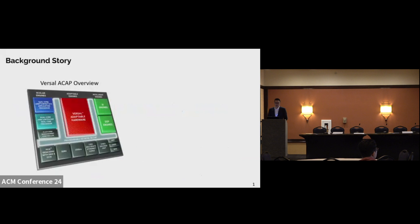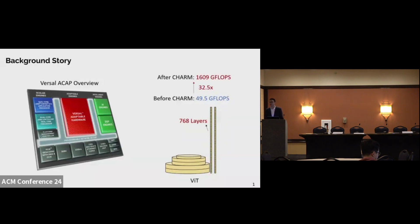Back to last year, we were very excited to work on Versal ACAP for its heterogeneity and high throughput. However, when designing the Matrix Multiply-based Accelerator, we found it's non-trivial to sustain the high throughput, especially for applications with both small and large matrices. Our first design achieved 49.5 gigaflops throughput, and after we applied CHARM, we had a 32.5x gain. You may wonder how we managed to do that.